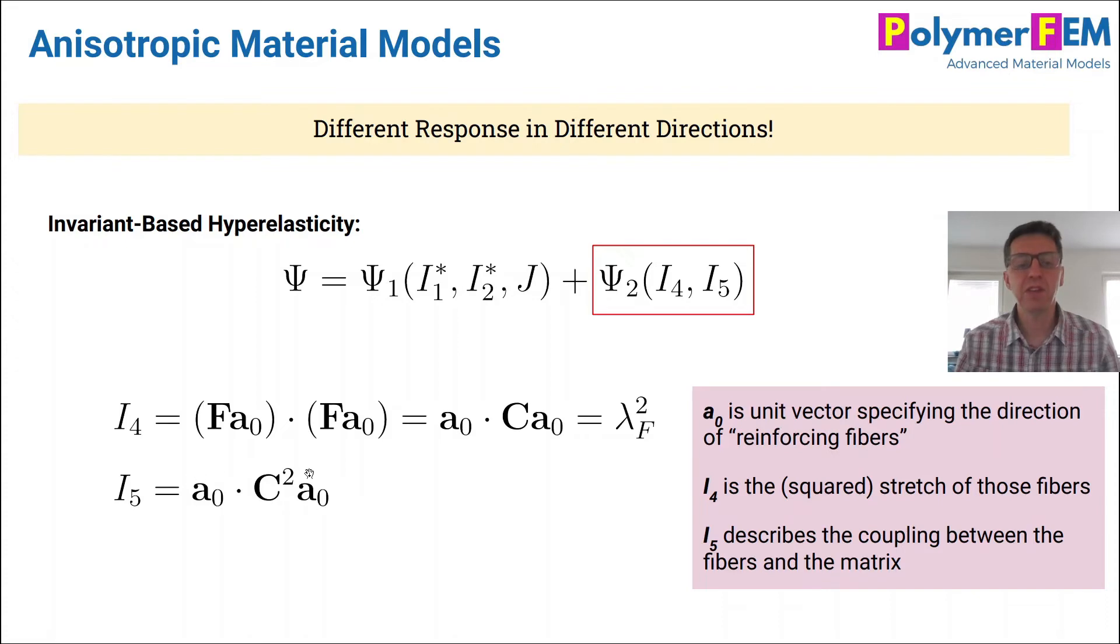So that gives you I4. I4 gives you how much material is stretched in the fiber direction. I5 is this equation. It's a little more difficult to express in words what that means, but it's a coupling between the fibers and the matrix. And it's usually less important than dependence on I4. So in many materials I5 is ignored. You have this matrix response and then you have a fiber contribution to the energy function.